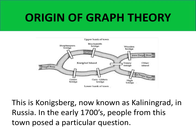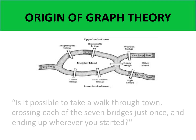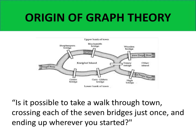Graph Theory originally began in the early 1700s in a Russian town named Königsberg, which is now known as Kaliningrad. This town has seven bridges connecting the islands A, B, C, and D. People from this town posed a particular question: is it possible to take a walk through town, crossing each of the seven bridges just once, and ending up wherever you started?